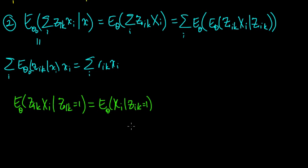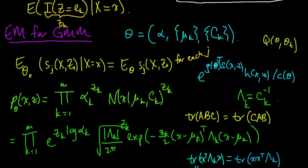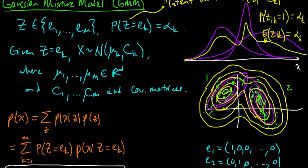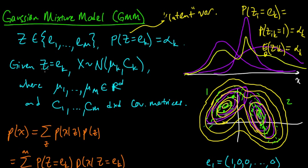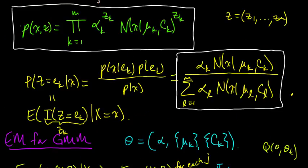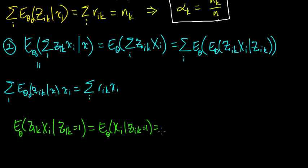Going back to our model: if Z_ik equals 1, then Z_i equals e_k, the k-th standard basis vector. We defined X_i to be normally distributed with mean μ_k and covariance C_k given that. So the conditional expectation — the conditional mean of this distribution — is just μ_k. Very nice.